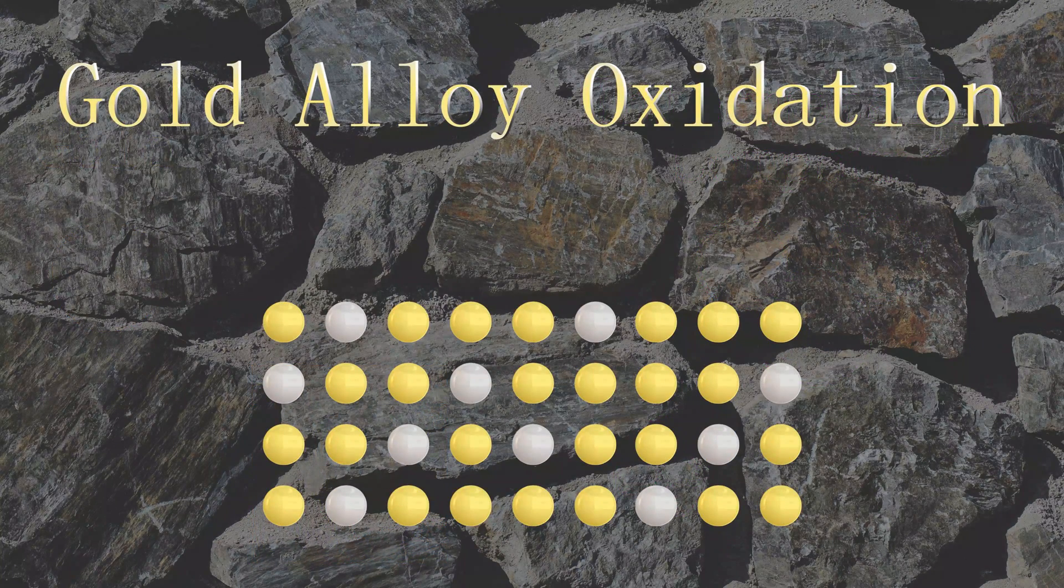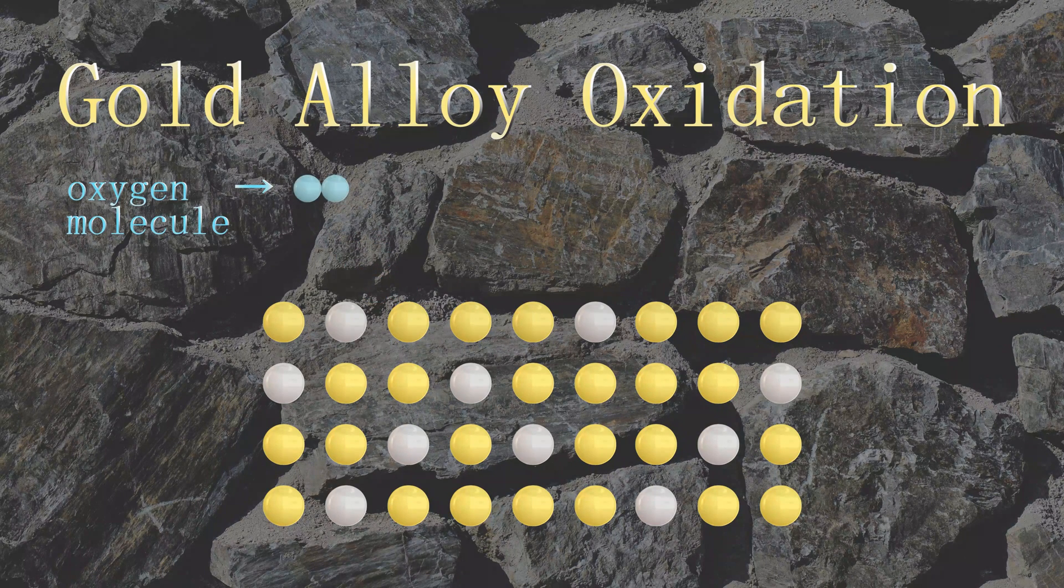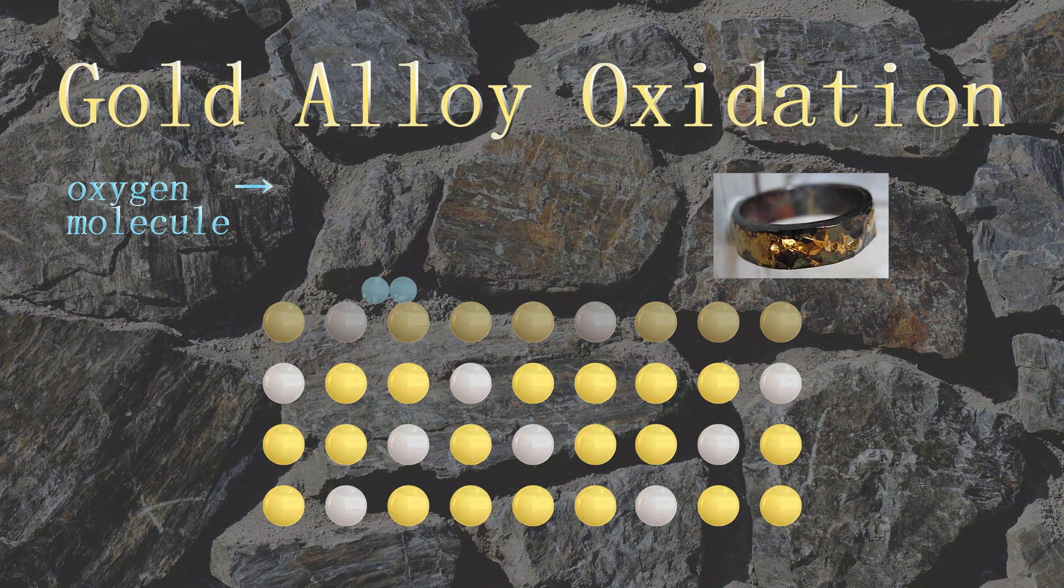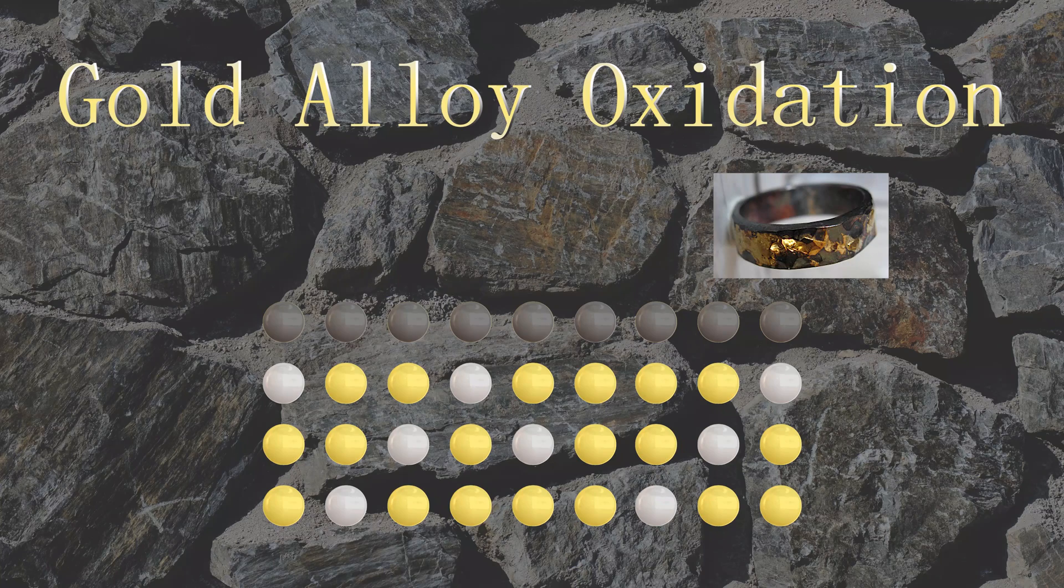One last method of producing different colors of gold is by forming oxides of different alloys. By causing the outer layer of certain alloys to corrode, shades of either black or blue gold can be produced. But this color is only forming on the outermost layer.